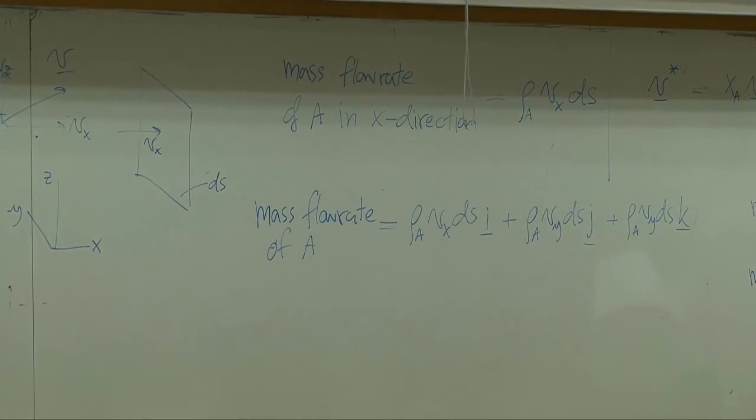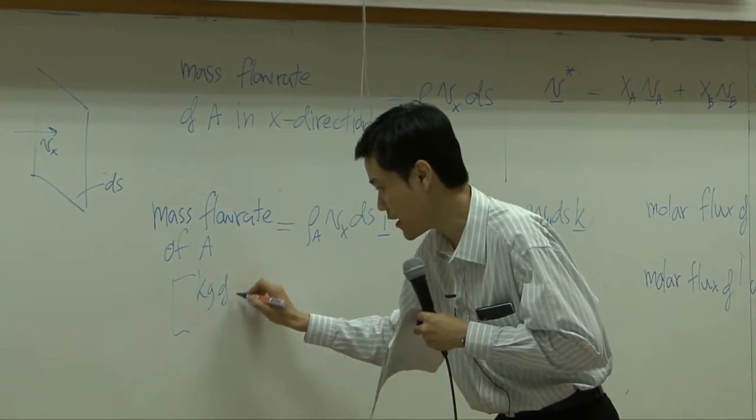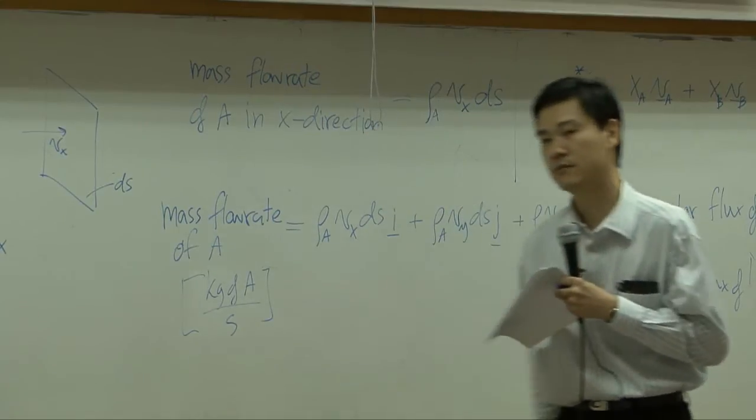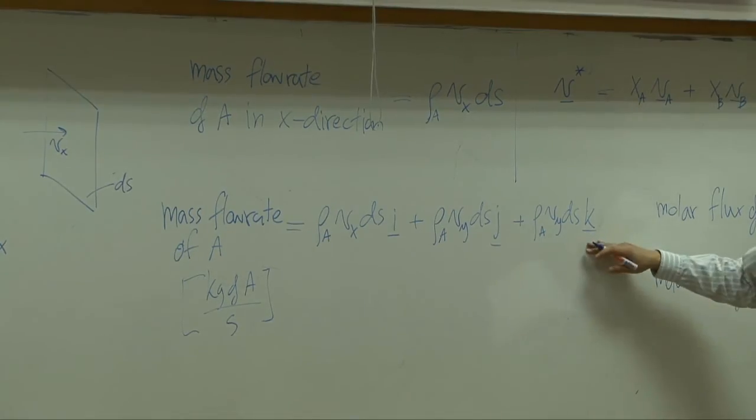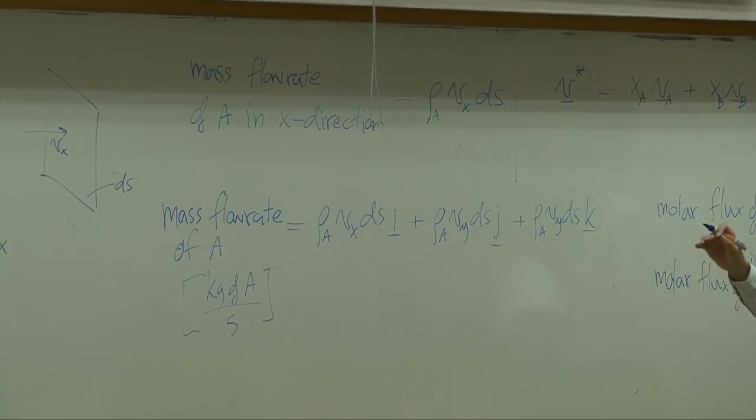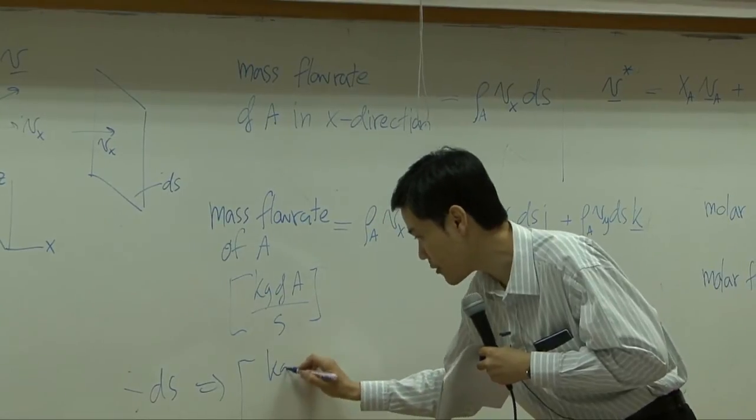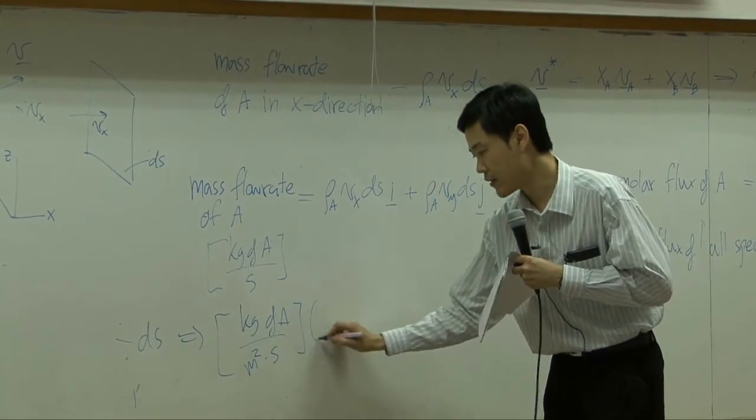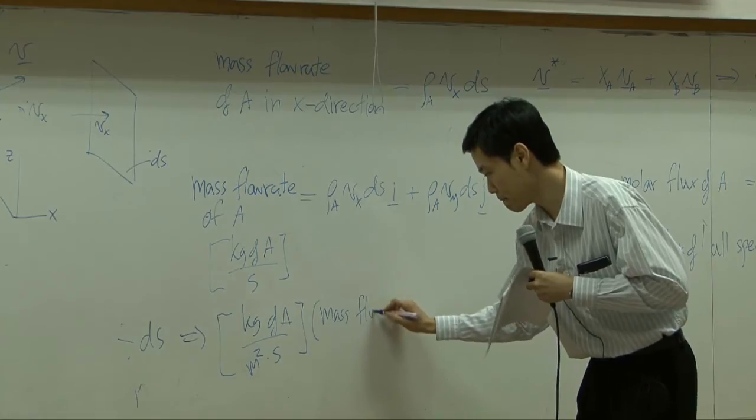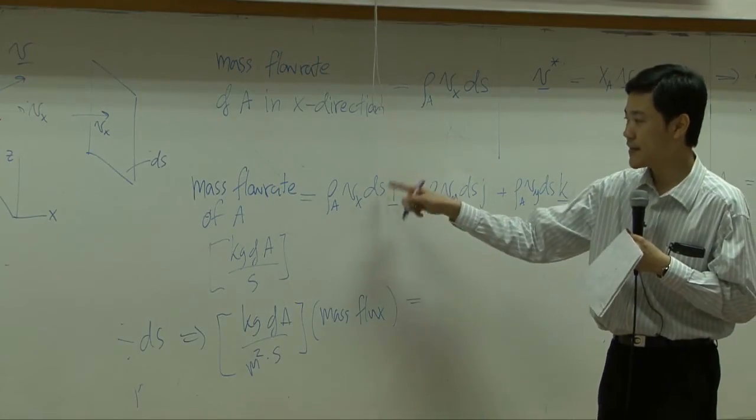Right? Because mass flow rate is supposed to be vector. The unit of mass flow rate is supposed to be kilogram of A per second. Alright? From here, if you divide the whole equation by ds, if you divide by ds, what you get would be kilogram of A per unit area per second, which now is mass flux.